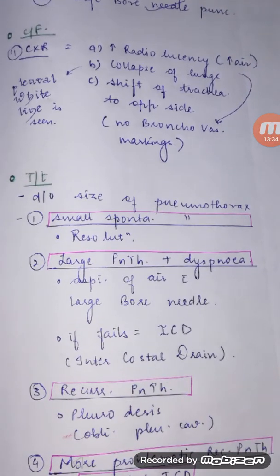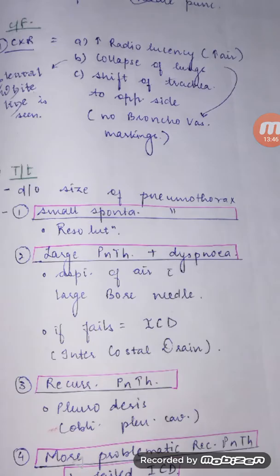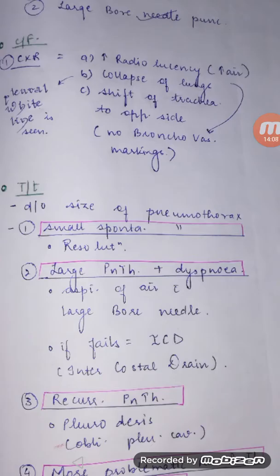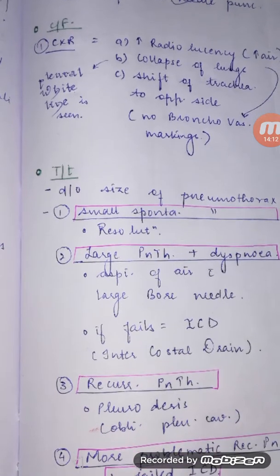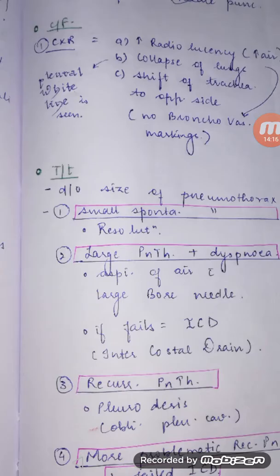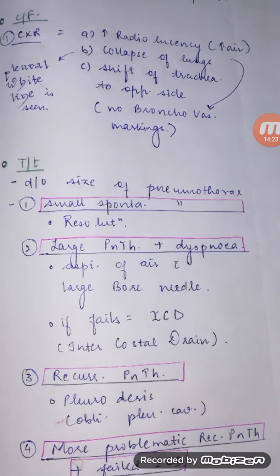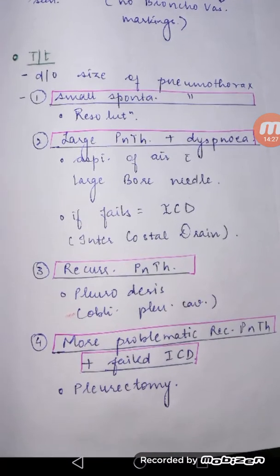On chest X-ray there are three main findings. Number one: increased radiolucency — the area will appear more black with no bronchovascular markings, because of air. Number two: collapse of lungs — the visceral pleura will be represented by a distinct white line. Number three: tracheal shift to the opposite side.